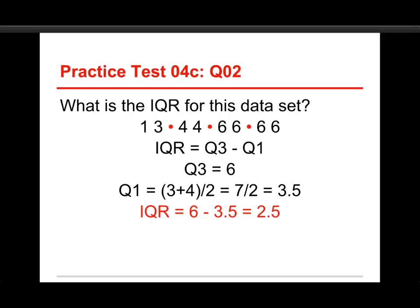The first quartile, Q1, now it's got two different values there. It's got a 3 on one side, a 4 on the other, and so what you do is you average those. So 3 plus 4 divided by 2 is equal to 7 divided by 2 is equal to 3.5. Then we go back to the formula for the IQR. We take the third quartile, Q3, that's 6, and we subtract the first quartile, Q1, that's 3.5. 6 minus 3.5 is 2.5, and so that's the IQR for this data set.